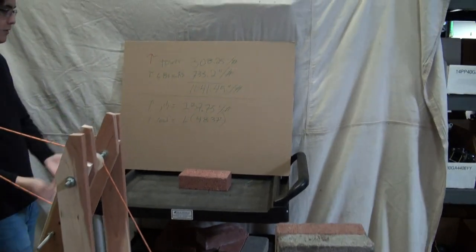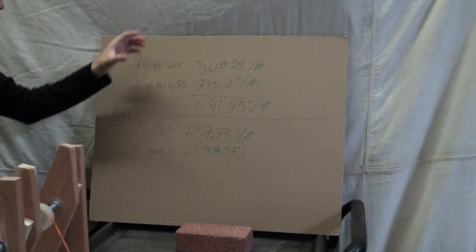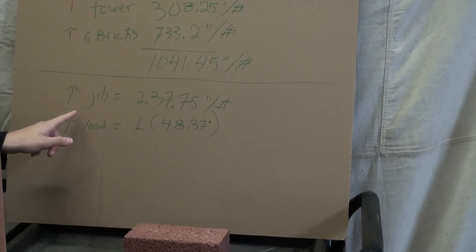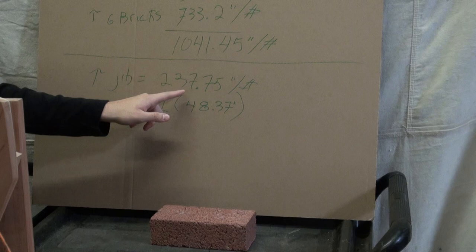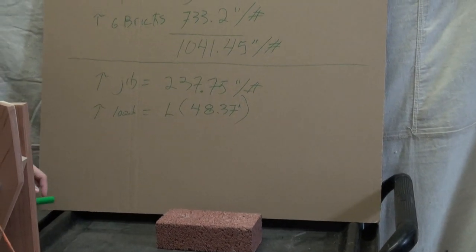So next step in order to find the maximum weight we can lift. First this is our 1041 we already found, and we know the torque of the jib which is 237.75 inch pounds of torque. That was from the last video.